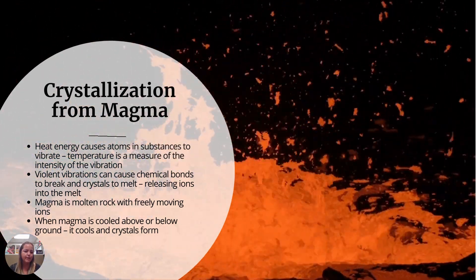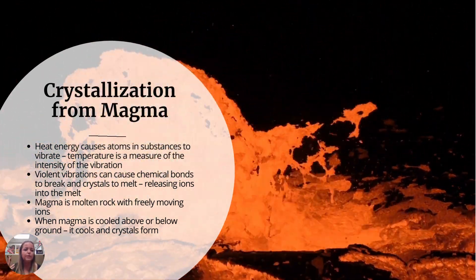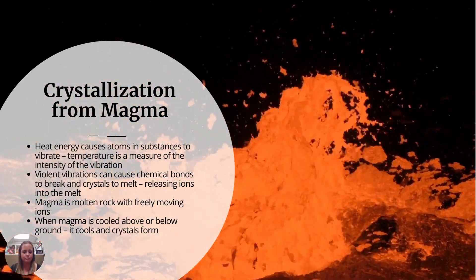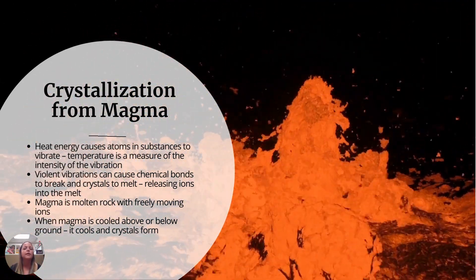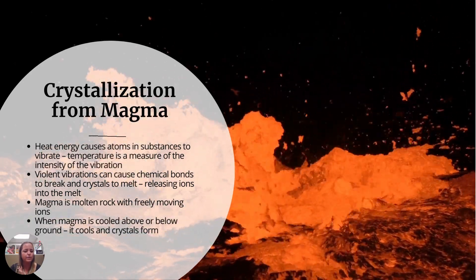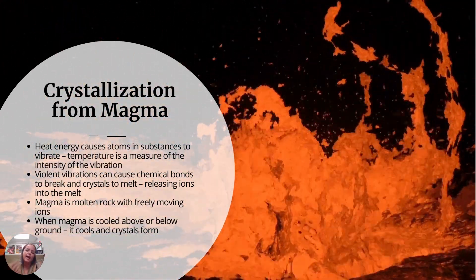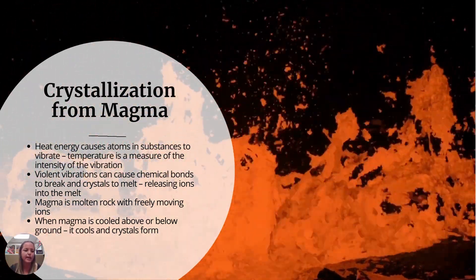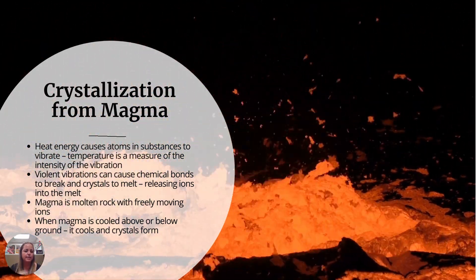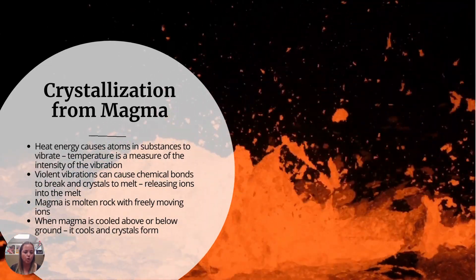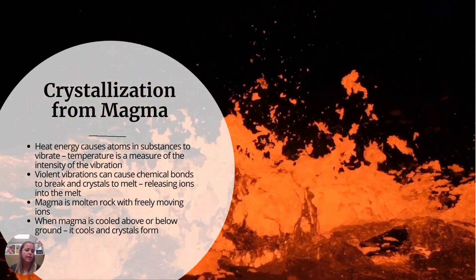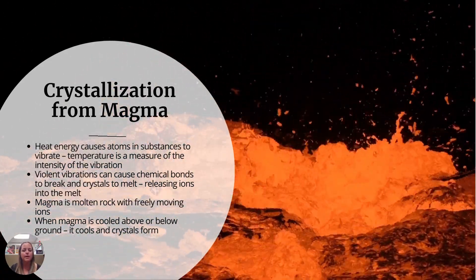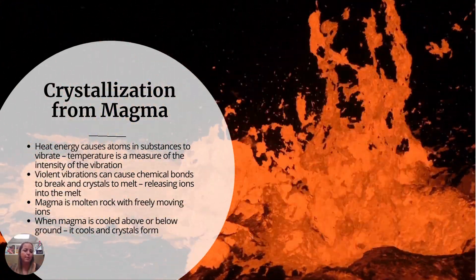Crystallization from magma: during the melting of rocks, they remelt in the crust or in the mantle into this molten form. Then as they come to the surface or erupt out of a volcano, they start to crystallize. As they crystallize, they form really large-scale crystals that we know as quartz, calcite — things like that crystallize out of a magma.